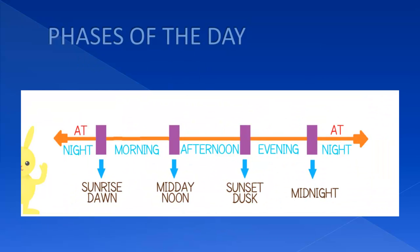During a single day we experience different stages: sunrise, midday, sunset, and midnight. This divides a day into four phases — morning, afternoon, evening, and night.